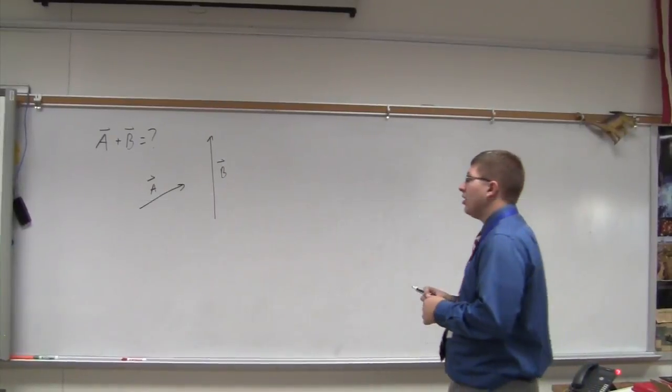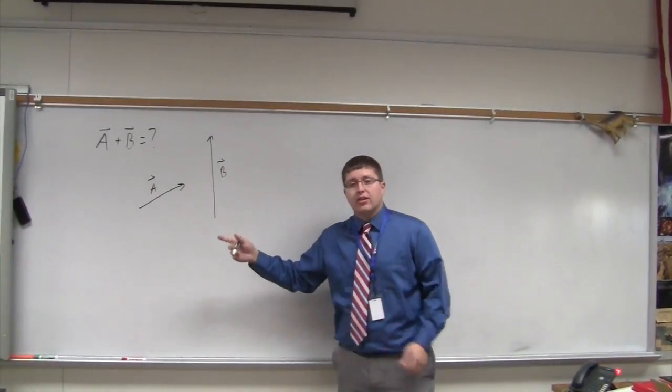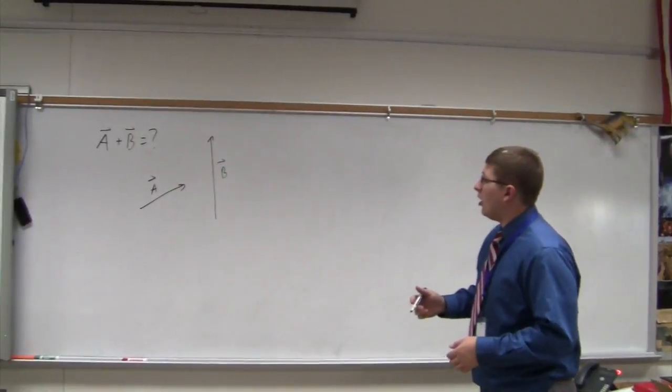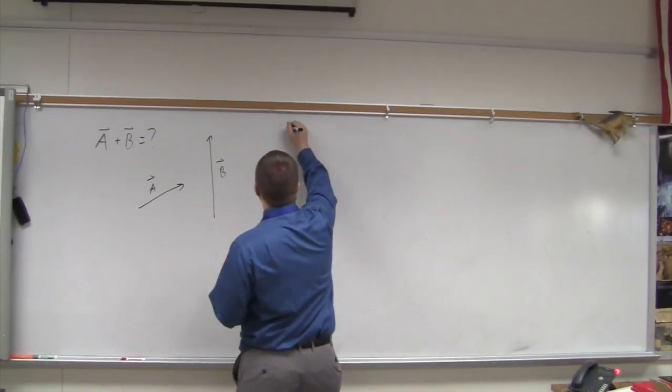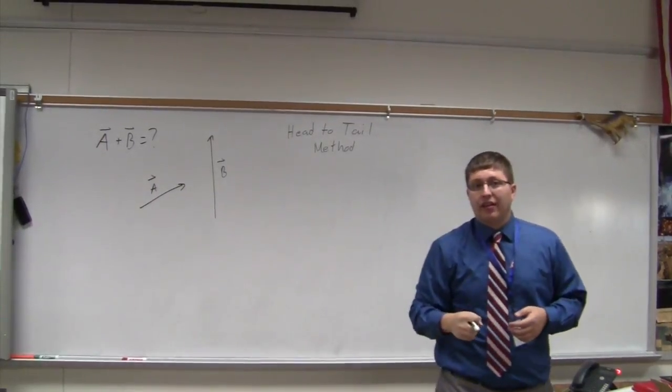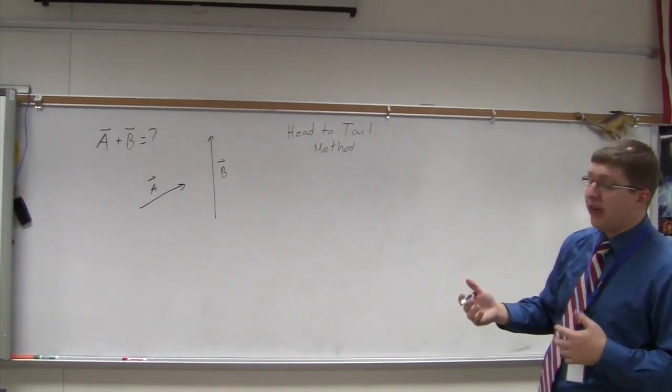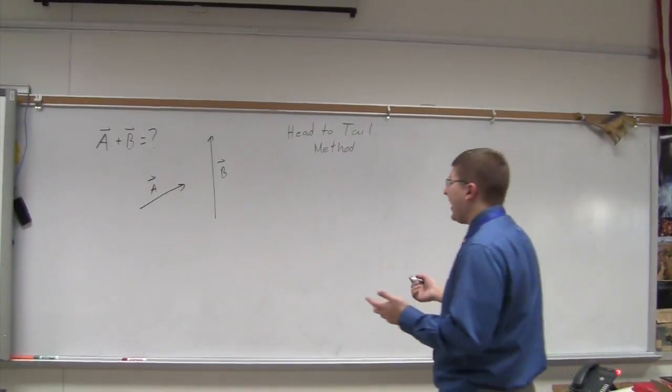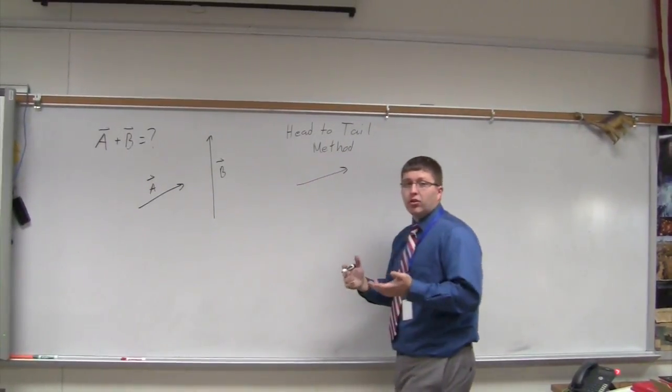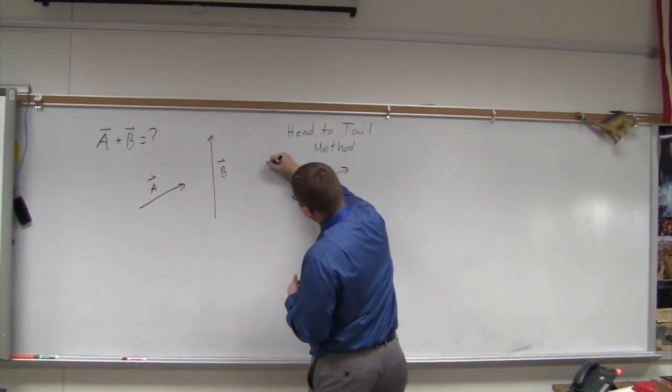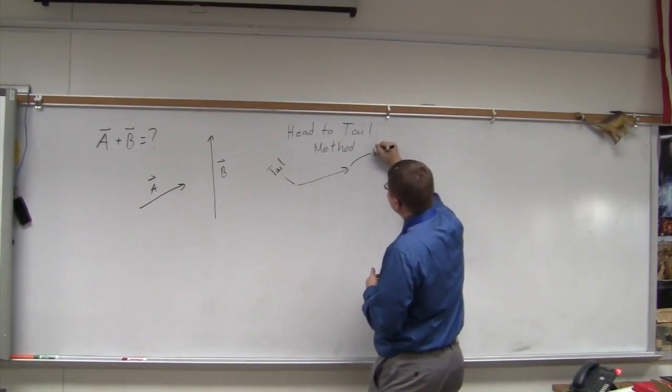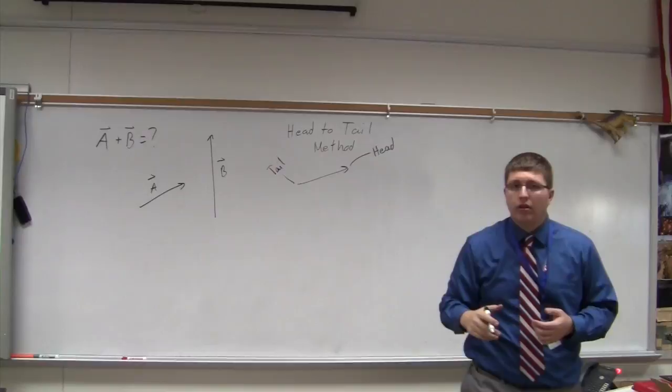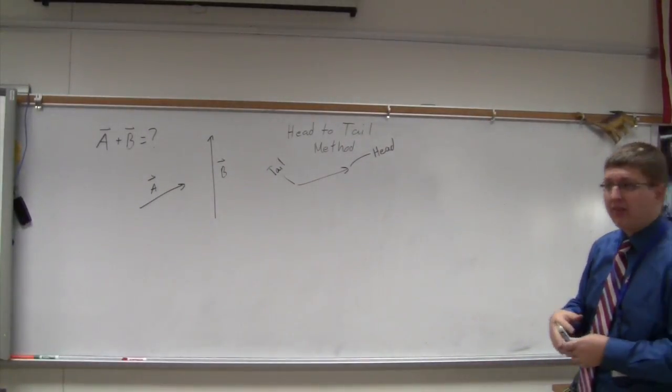So you're going to see that in a moment here, where we're able to slide our vectors around the page without changing them at all. All right, we're just going to start off with a basic example here. We're going to add these two vectors, A and B, pictorially. What we're going to do is use what's called the head-to-tail method. So the head-to-tail method looks something like this. First thing we're going to have to do is we're going to have to identify what's the head and what's the tail. And I think it's pretty intuitive, but just to be clear, when we have an arrow, I'm referring to the back end as the tail, and the front end then as the head.